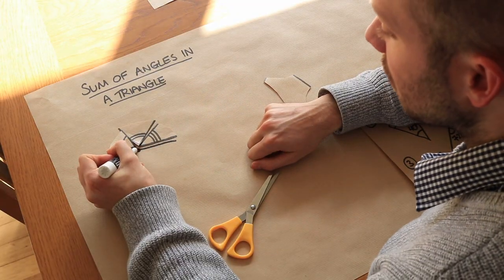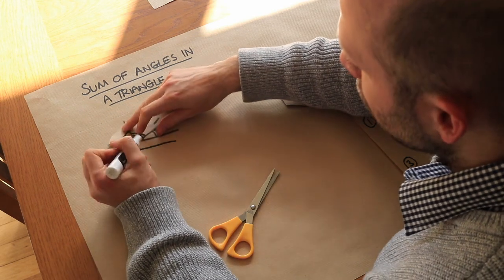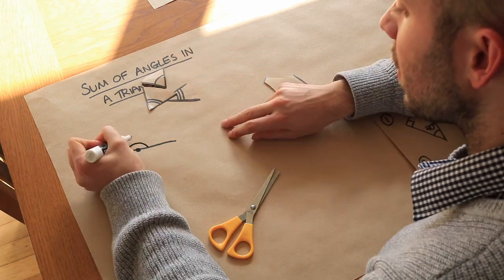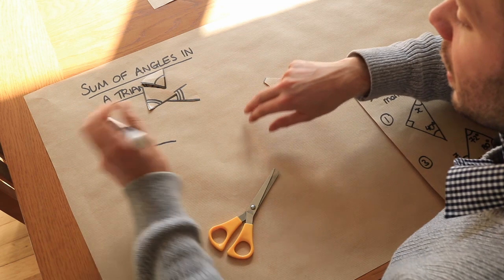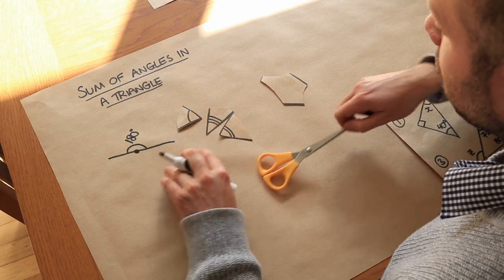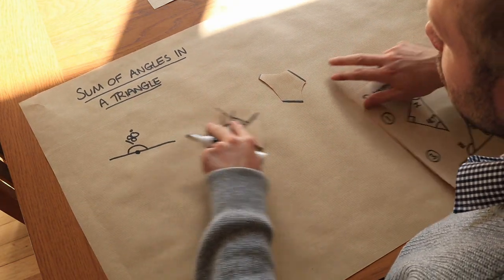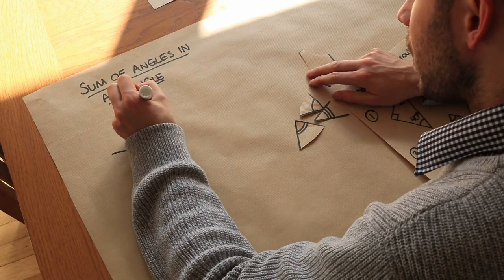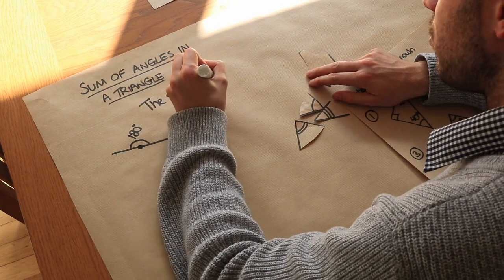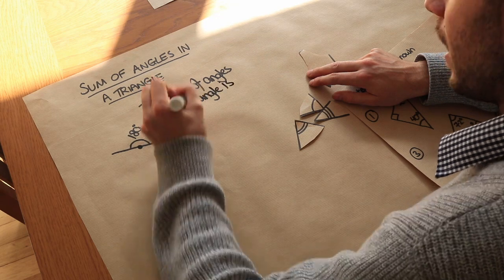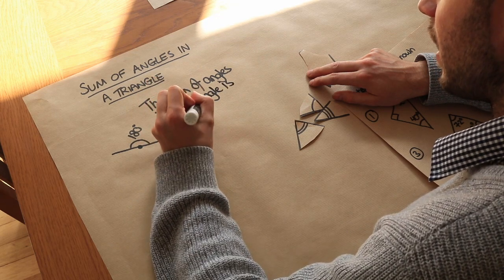And we've seen from previous videos the sum of angles on a straight line around a point is 180 degrees and that therefore means that the sum of angles in a triangle is 180 degrees and that's all you need to know for this topic. So the sum of angles in a triangle is 180 degrees.